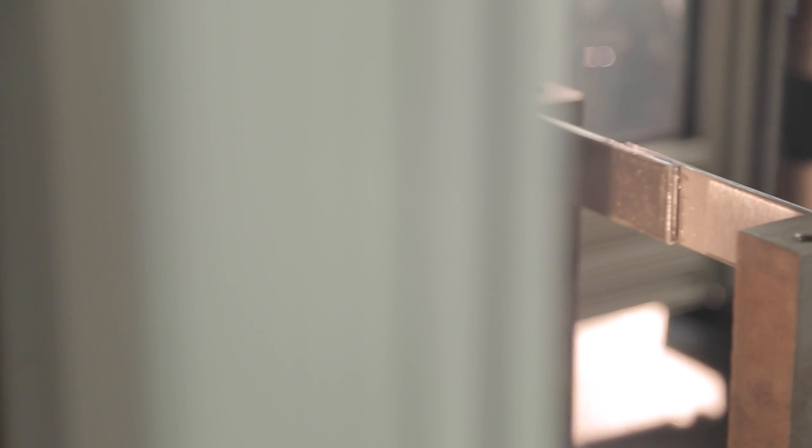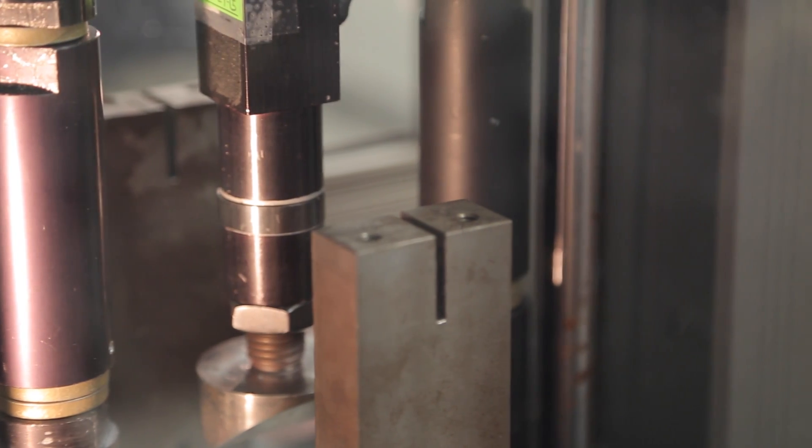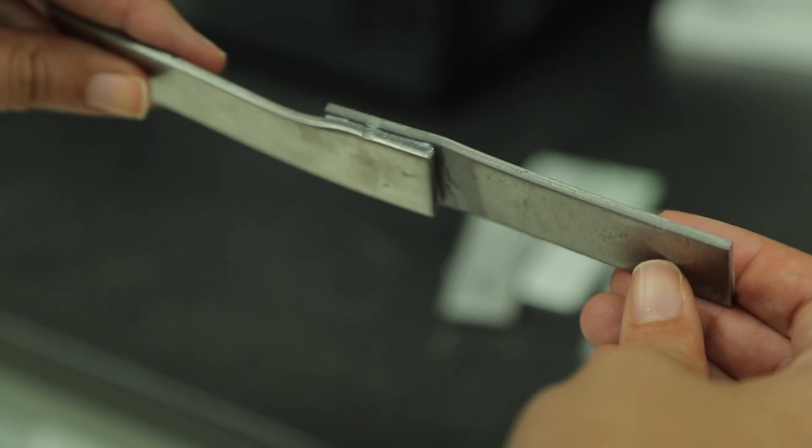One way to test for impact resistance is to drop a weight from a set height onto a bonded assembly and then record the absorbed energy. Did you know that nowadays adhesives which in the past had low peel and impact strengths can be toughened with elastomers, resulting in substantial improvement to these properties?